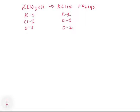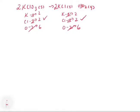Now we balance O last. We have three on the left and two on the right, so the common multiple is six. We multiply KClO3 by 2 on the left, and O2 by 3 on the right, giving us six oxygens on each side. But placing the 2 in front of KClO3 also increases K and Cl to 2 on the left, so we put a 2 in front of KCl on the right. Now the atom inventory matches — we have conservation of mass, and the reaction is balanced.